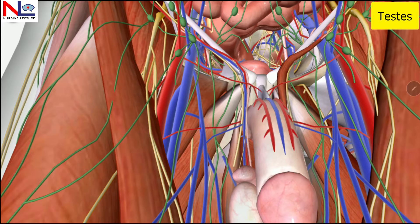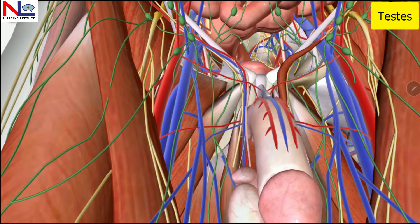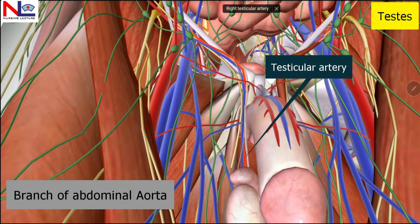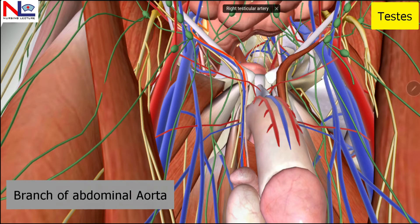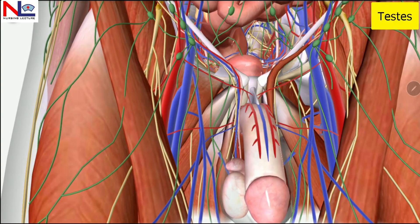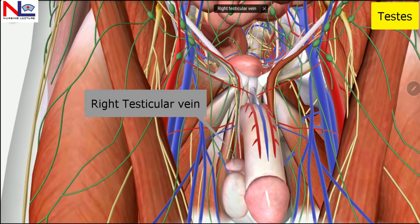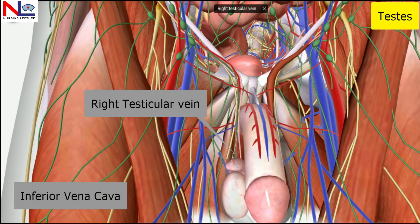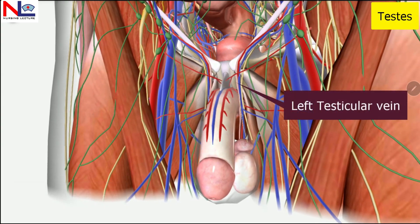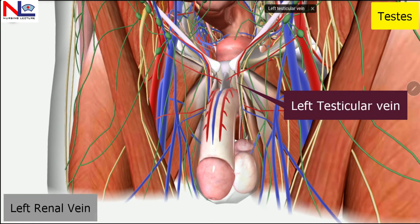Here in this animation you can see the blood supply to the testes. There is a right and left testicular artery, which are branches of the abdominal aorta, descending through the inguinal canal. The venous drainage is by the right testicular vein, which drains into the inferior vena cava, whereas the left testicular vein drains into the left renal vein rather than directly into the inferior vena cava.